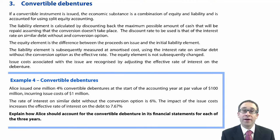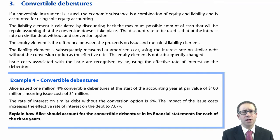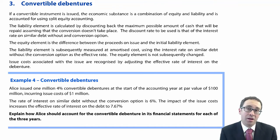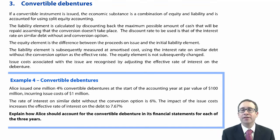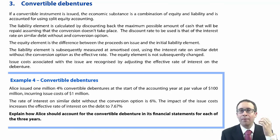Following on from our financial liabilities in the last session, we're now going to move on to look at convertible debentures, which if memory served me right, in F7 was one of the harder aspects. It's still hard now — still a challenge and will be a challenge if it crops up within the exam.